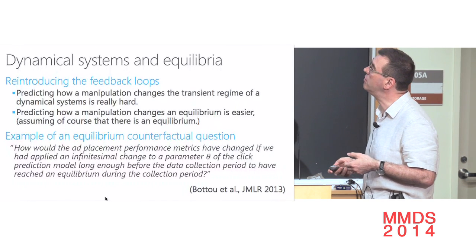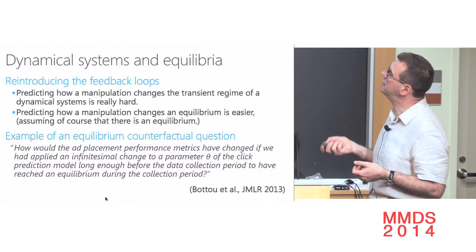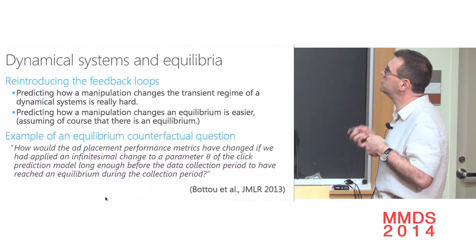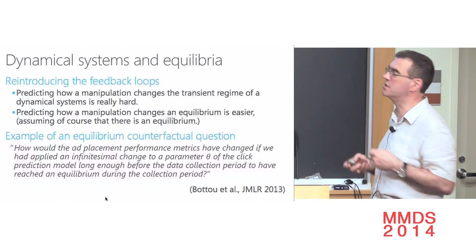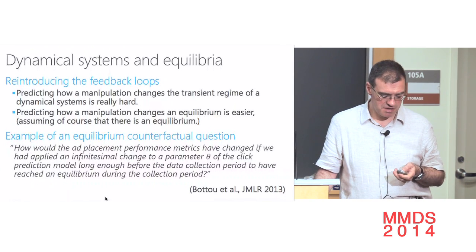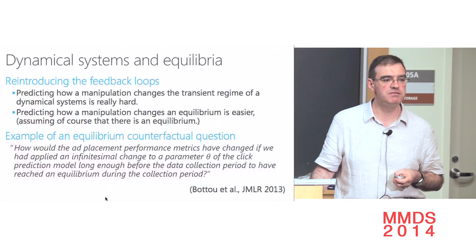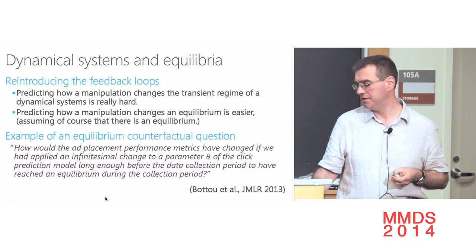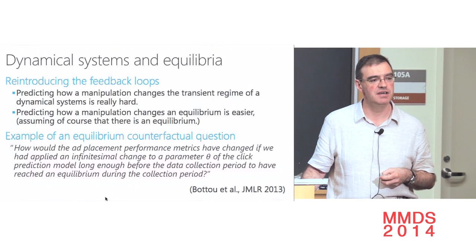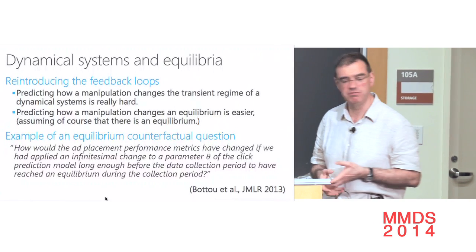The question is: how would the ad placement performance metrics have changed if we had applied a small change to a parameter theta of the click prediction model, long enough before data collection to have reached equilibrium during the data collection period? This is something that has been done in physics forever — using a method called quasi-static analysis, common in thermodynamics. You can get a differential answer to this kind of question in a clean way.